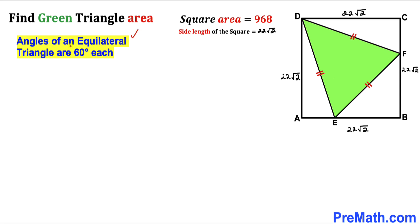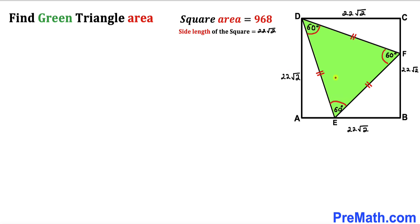Now let's recall this crucial fact: angles of an equilateral triangle are 60 degrees each. Since we are dealing with equilateral triangle DEF, all angles are 60 degrees. Let's label the side length of this equilateral triangle as lowercase a, so all side lengths equal a. We can observe that side DC equals side AD, and length DF equals length DE. So by symmetry, segment FC equals segment AE.